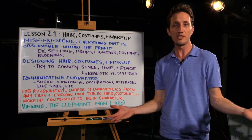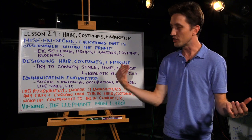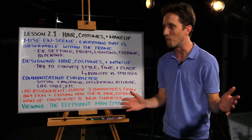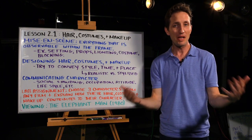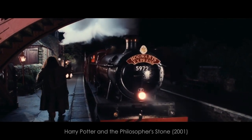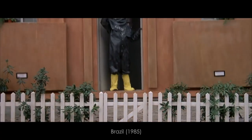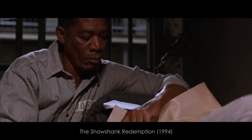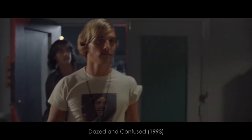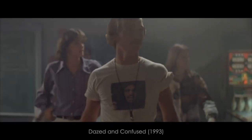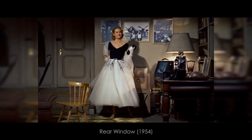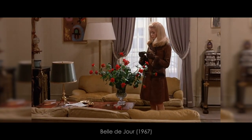But before we get there, we have to talk about what Unit 2 is even about. Unit 2 is about this fancy French phrase called mise-en-scène. Basically, when you're watching a film, everything that you see in the observable frame is part of the mise-en-scène — whether that's the setting, the props the characters use, the different lighting schemes and color palettes, the way an actor moves throughout the set, or, which we're going to talk about today, the hair, costume, and makeup of a character. It all contributes to the film's mise-en-scène.